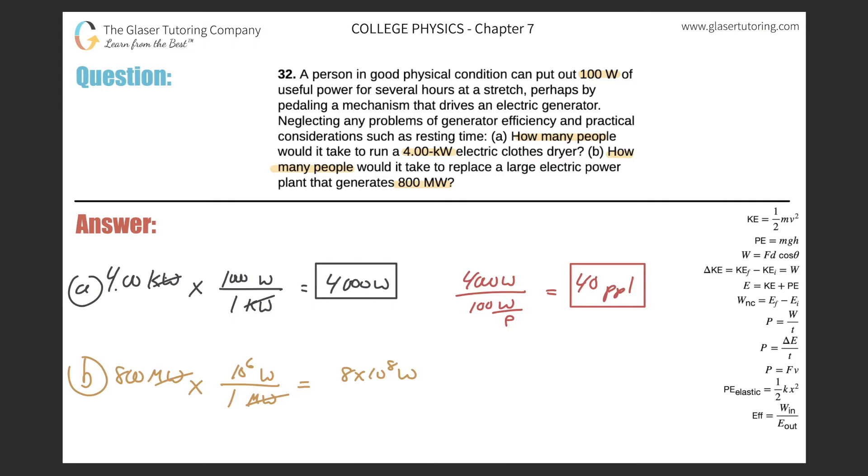So this is the amount of power produced by that power plant. All right, and now I need to find out how many people it would take. So it's the same process. We'll take 8 times 10 to the 8th, and then divide that by 100. All right, and that'll tell us the amount of people. So we're just going to basically subtract 2 from that exponent of 8. So this becomes 8 times 10 to the 6th people.